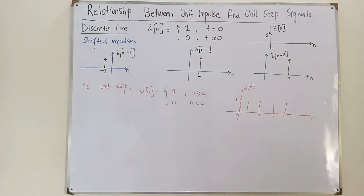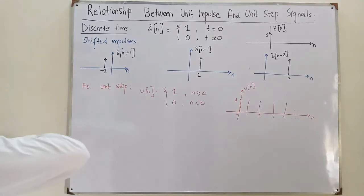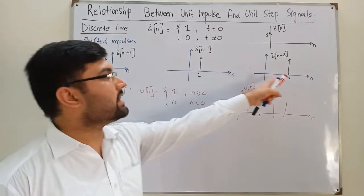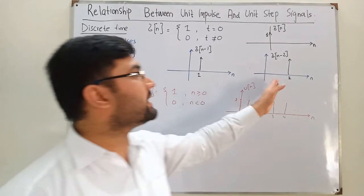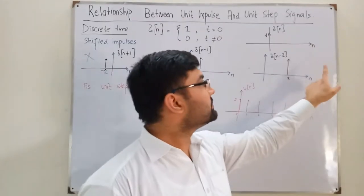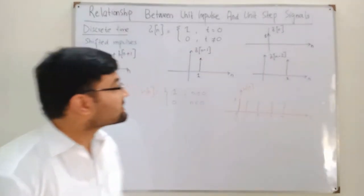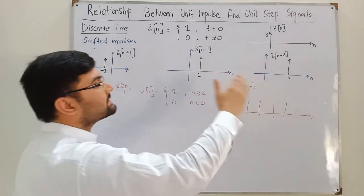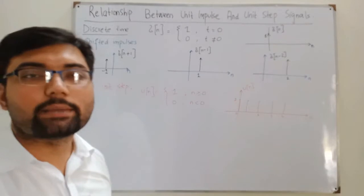Now have a look. We are only interested in the right shifts. So you have delta of n minus 1 at n equal to 1, delta of n minus 2 at n equal to 2, delta of n minus 3 at position n equal to 3, delta of n minus 4 at position n equal to 4. So if you sum the shifted impulses toward the right from 0 to infinity, you get the unit step signal.